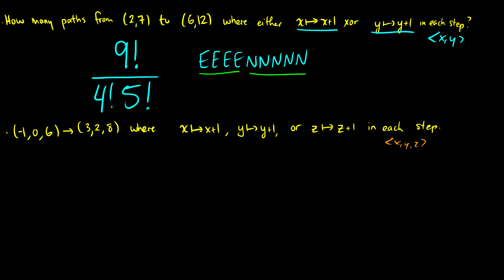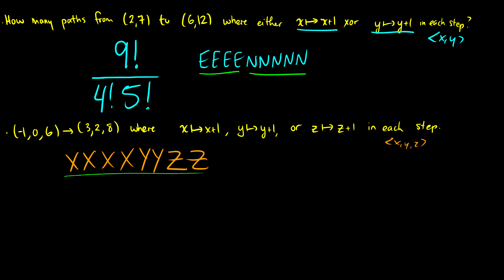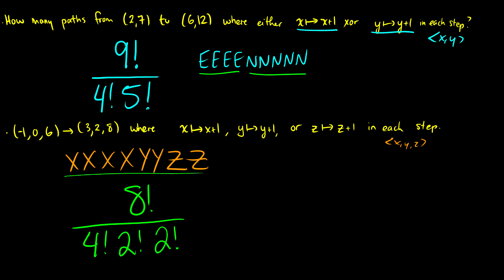We have to go four x's — from -1 to 3 is four steps in x. We have to go from 0 to 2 in y, so that's two y's. And from 6 to 8 in z, that's two z's. So we find the number of permutations of this word with 4 x's, 2 y's, and 2 z's. That's 8 factorial over 4 factorial times 2 factorial times 2 factorial.